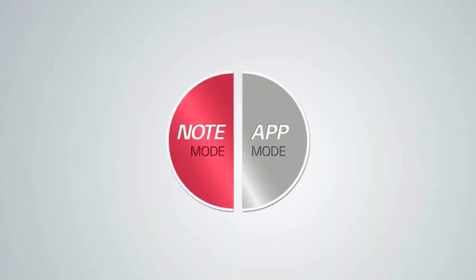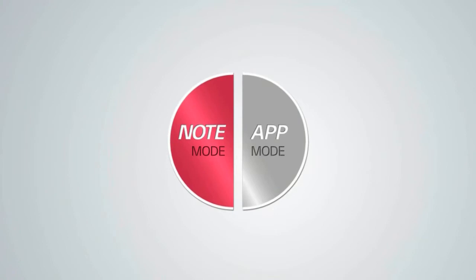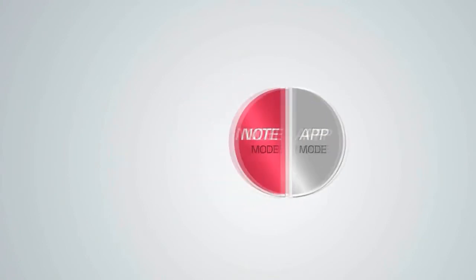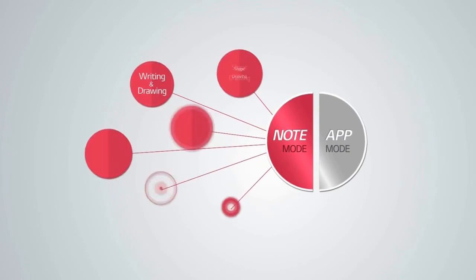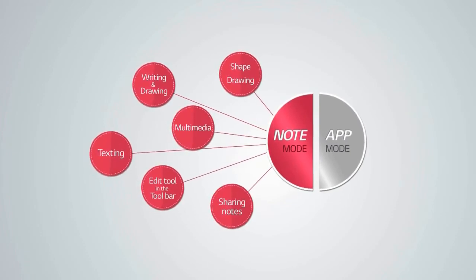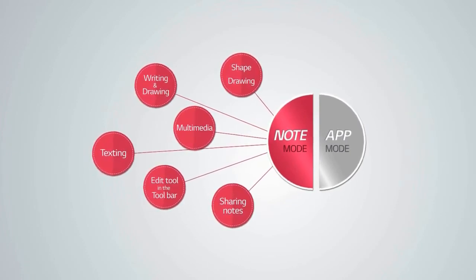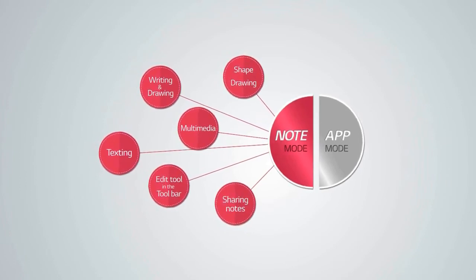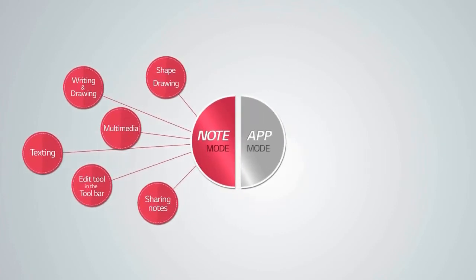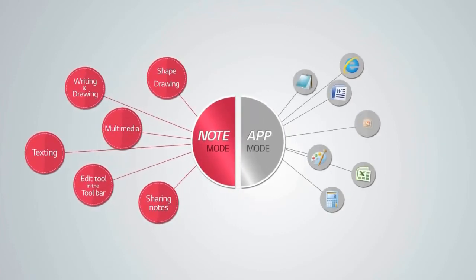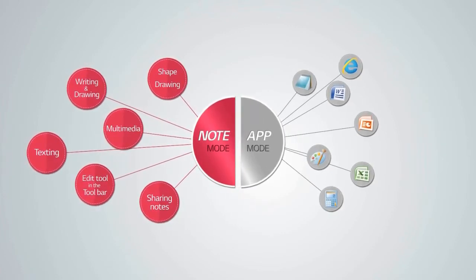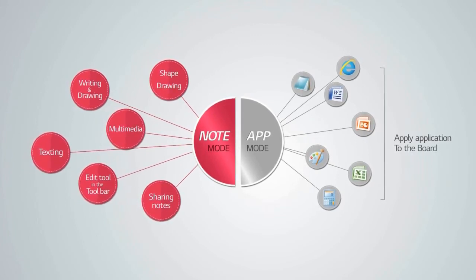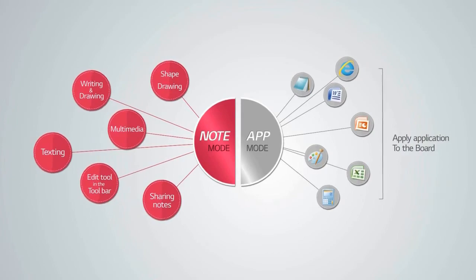Now let's take a look at the main functions. There are two modes in IWB software: note mode and app mode. Note mode provides smart and interactive board functions which enable writing, drawing shapes, using multimedia contents, texting on the applications, and sharing notes. App mode makes it easy for users to utilize other application programs on the whiteboard, such as Microsoft Office including PowerPoint, Excel, Word, and Internet access.